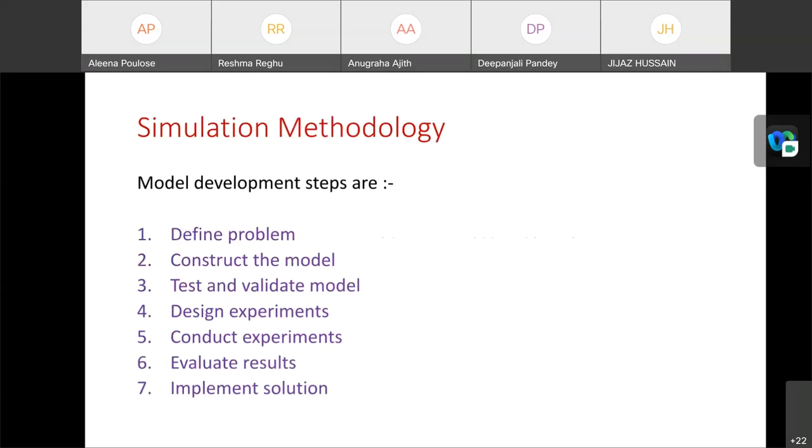Simulation methodologies. The development steps of simulation are first one to define the problem and next construct the model. Then test and validate that model. Next design experiments and conduct experiments. Then evaluate results and implement solution. These are the steps for development of simulation.